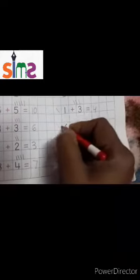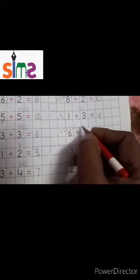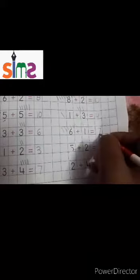Six: one, two, three, four, five, six. One: one. Count all the lines: one, two, three, four, five, six, seven. Six plus one is equal to seven.